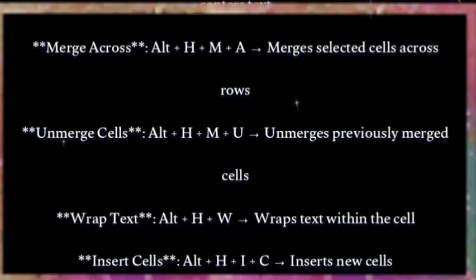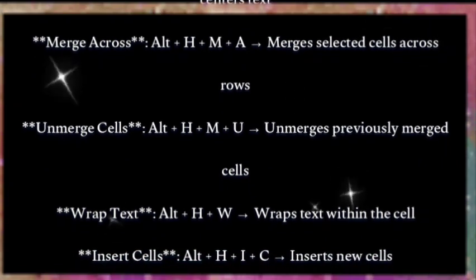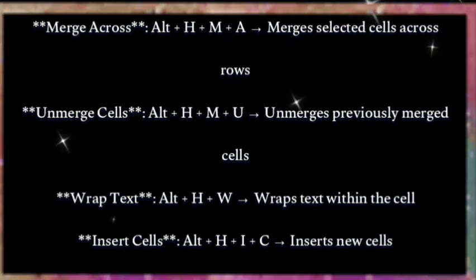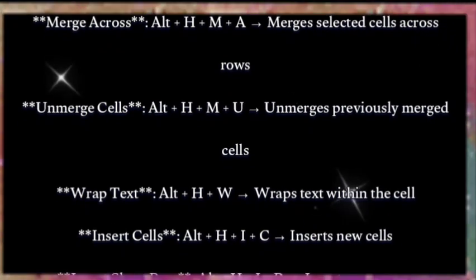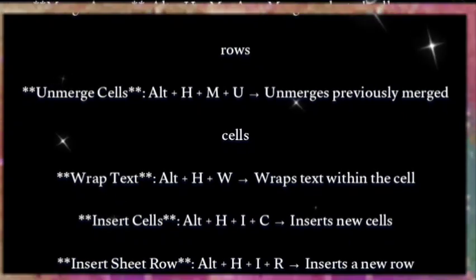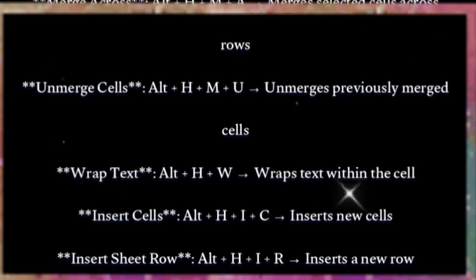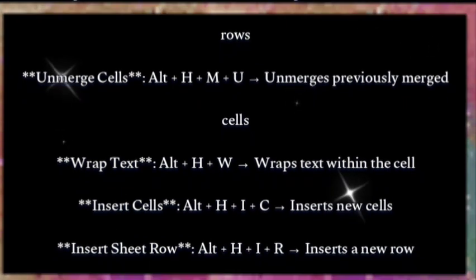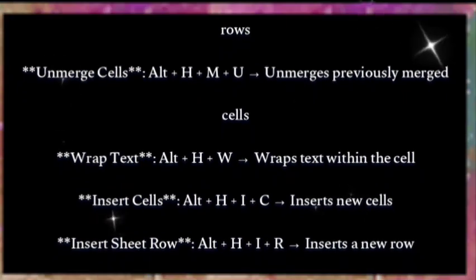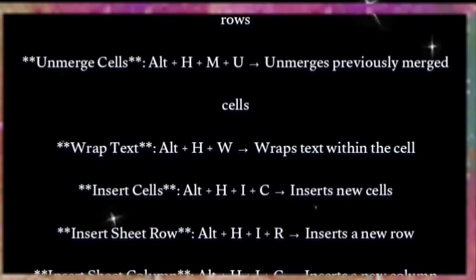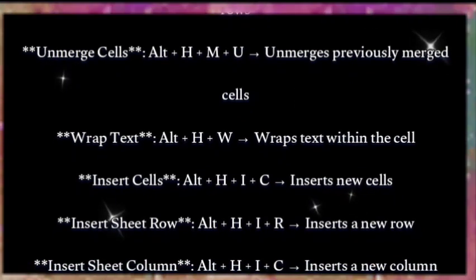Merge across: Alt+H+M+A — merges selected cells across rows. Unmerge cells: Alt+H+M+U — unmerges previously merged cells. Wrap text: Alt+H+W — wraps text within the cell.